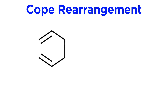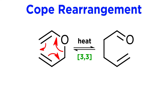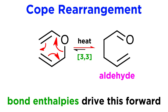Let's make one more modification on the Cope rearrangement. We can replace one of the carbon atoms with an oxygen atom, perhaps on carbon 3, to give this ether. Now let's allow the 3-3 shift to take place, and as we can see, we are left with an aldehyde. As we might imagine, bond enthalpies dictate that this equilibrium will lie heavily to the right, favoring the stable carbonyl.